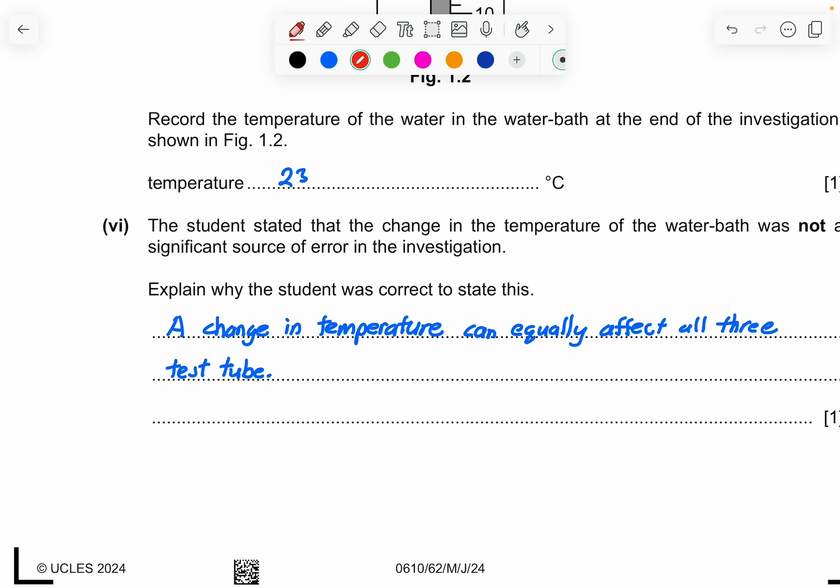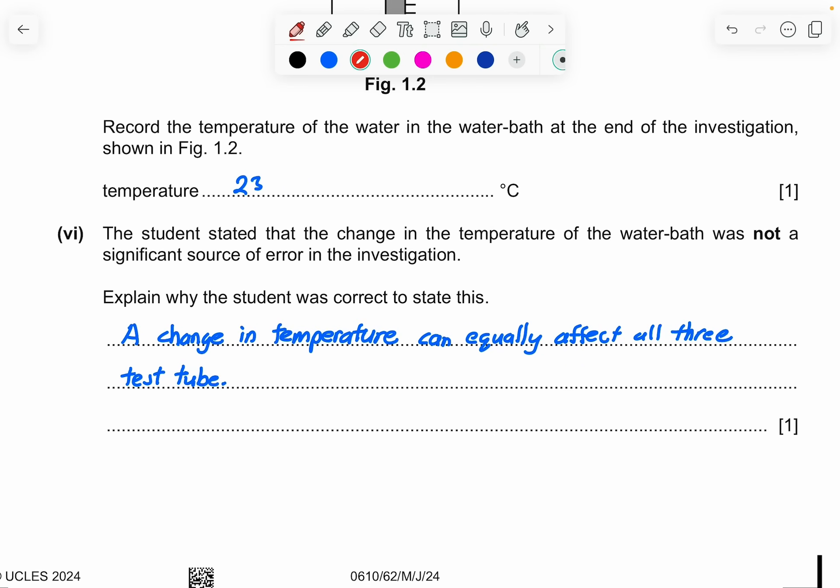Part 6, the student stated the change in the temperature of the water bath was not a significant source of error in this investigation. Explain why the student was correct to state this. Because the moment you change the temperature, like you say that from 20 to 30 or 30 to 40, what happens is that it's not one of the test tubes changing. It's all of them are changing together because you are keeping them constant. The constant variable is the temperature of the water bath. So that is the reason why the student is correct to state this. It's because it will equally affect all three test tubes in this investigation.